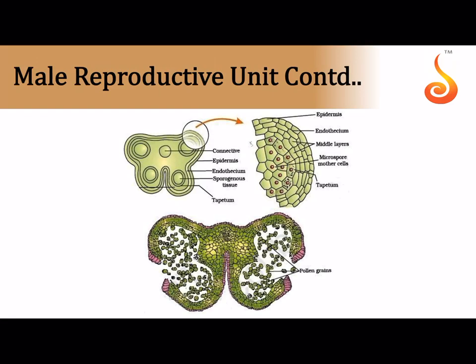Inside the anther, taking a section of a young anther reveals four chambers or compartments called thecae — that is why it is called a dithecous anther. Each half has two thecae. If you magnify the structure, each compartment is a microsporangium consisting of a sporogenous tissue in the center surrounded by four distinct wall layers.